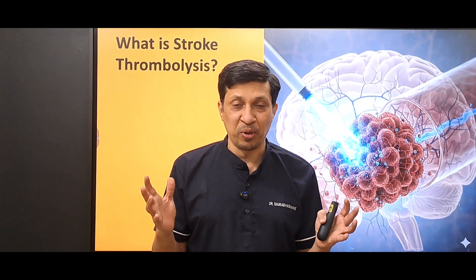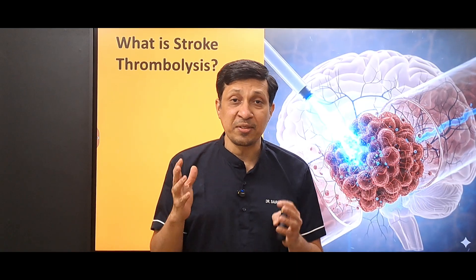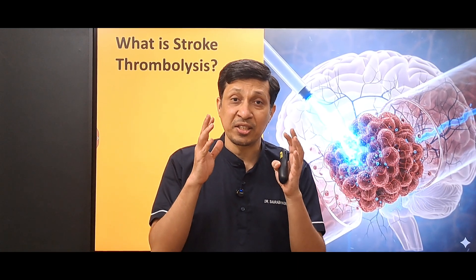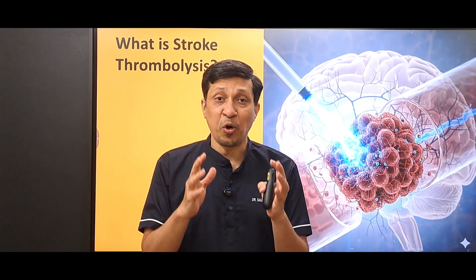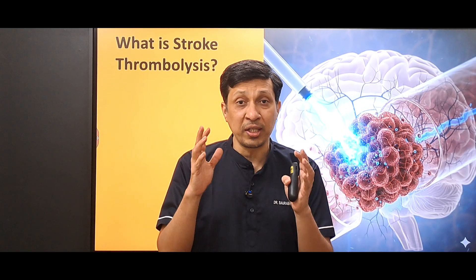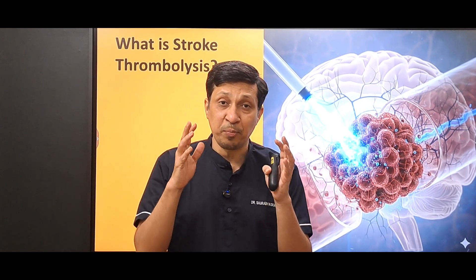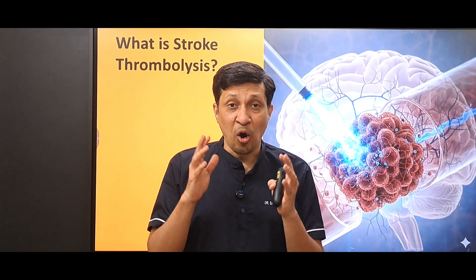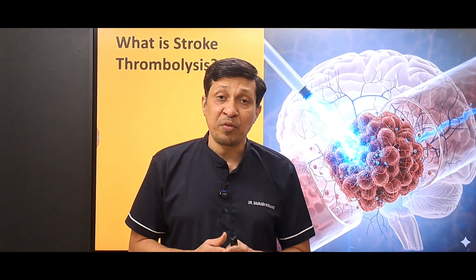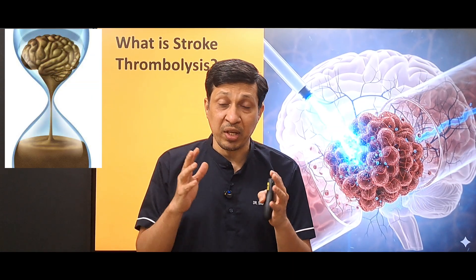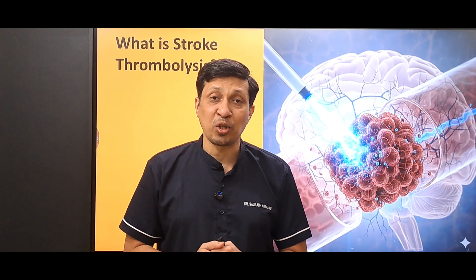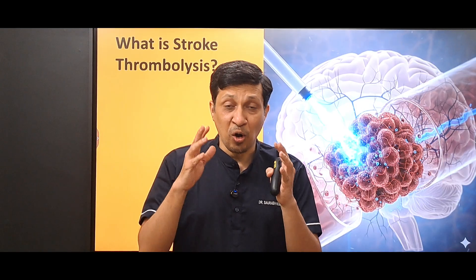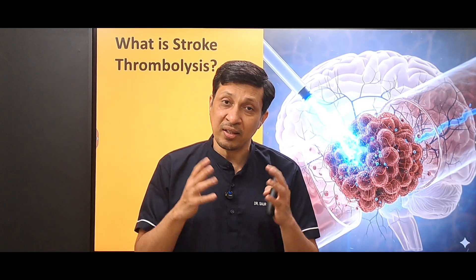So what is stroke thrombolysis? Stroke thrombolysis means dissolving the blood clot that has stopped blood flow to the brain — in other words, reopening the occluded artery in acute ischemic stroke. The aim is to restart perfusion before irreversible damage occurs, because time is brain: every minute lost leads to the death of millions of neurons.